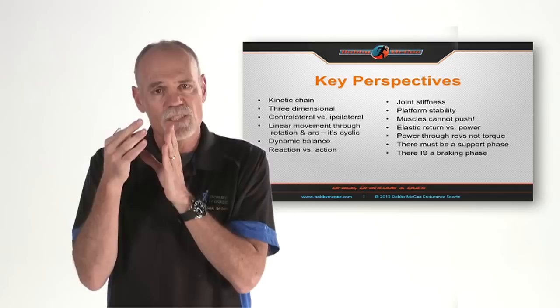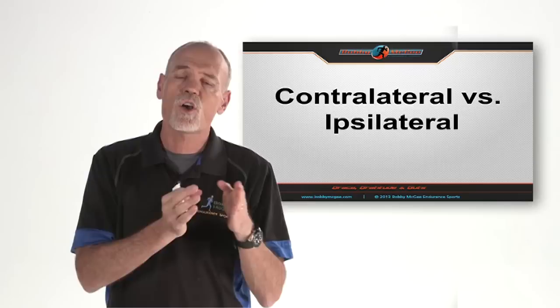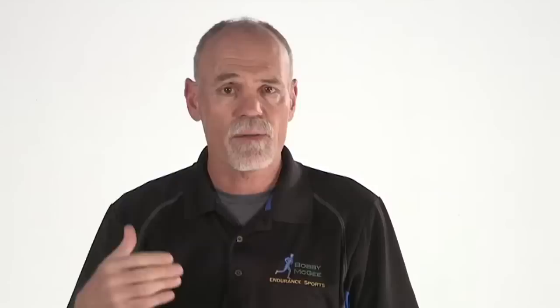There's an important concept: the differentiation between ipsilateral and contralateral sports. Ipsilateral sports mean one side of the body moves at the same time. For example, in swimming, when you put your hand in the water, the shoulder moves forward, the hip drops down, you rotate, and your entire right side moves together.